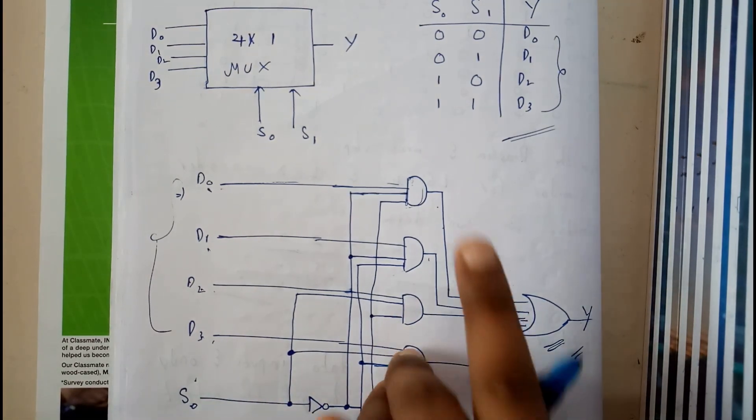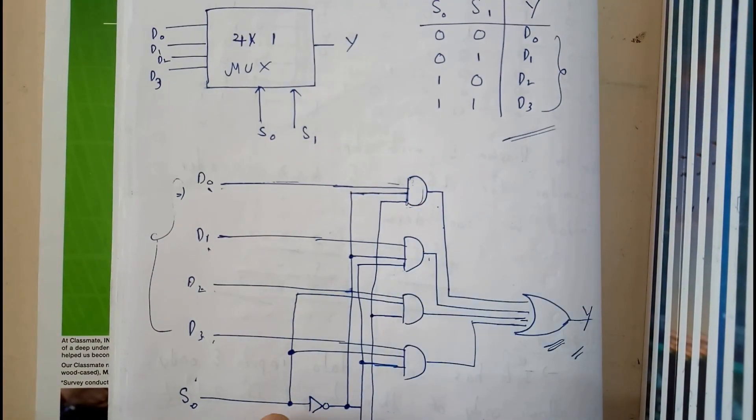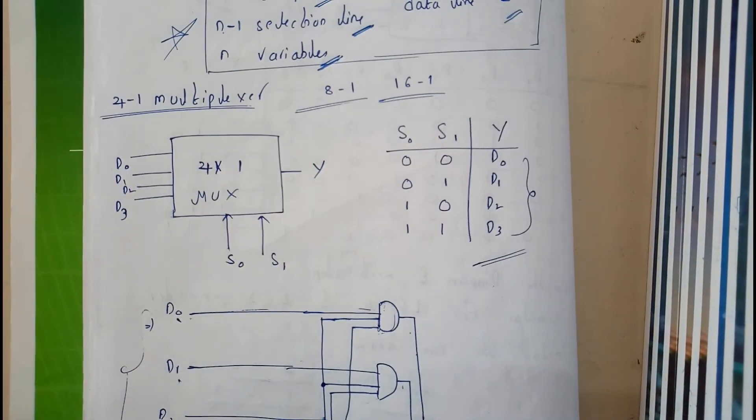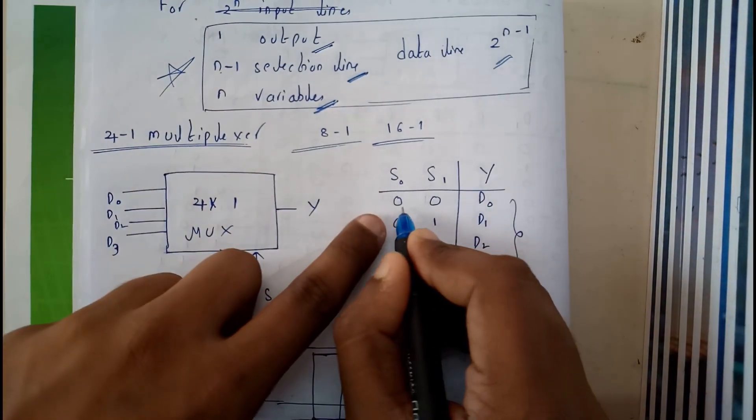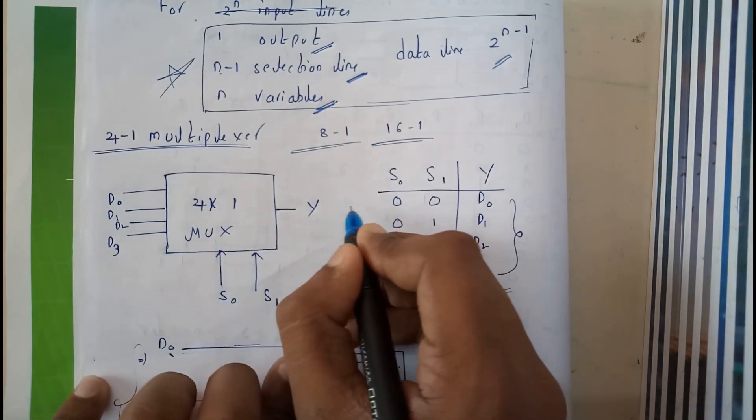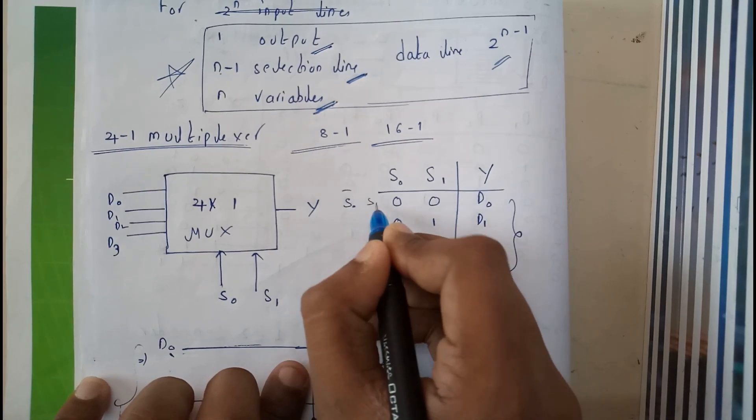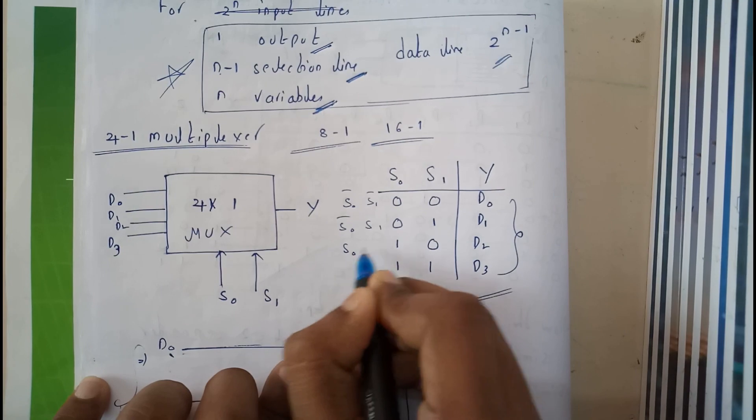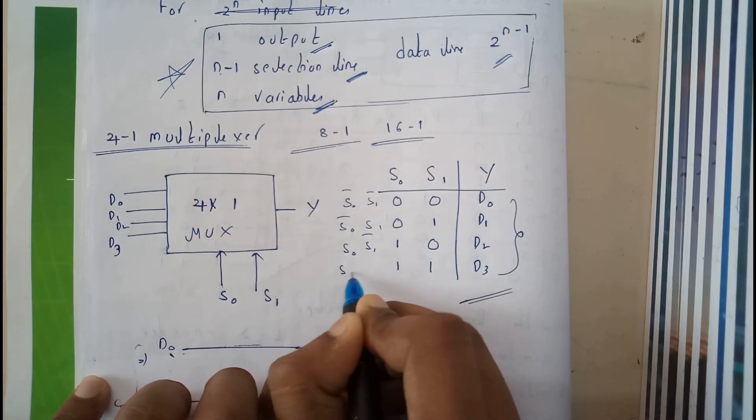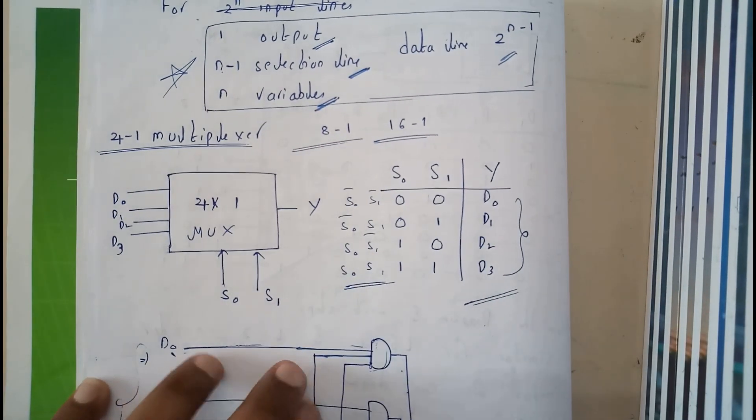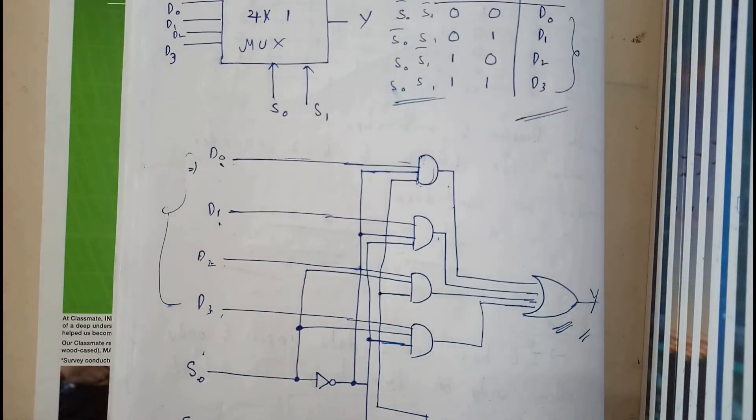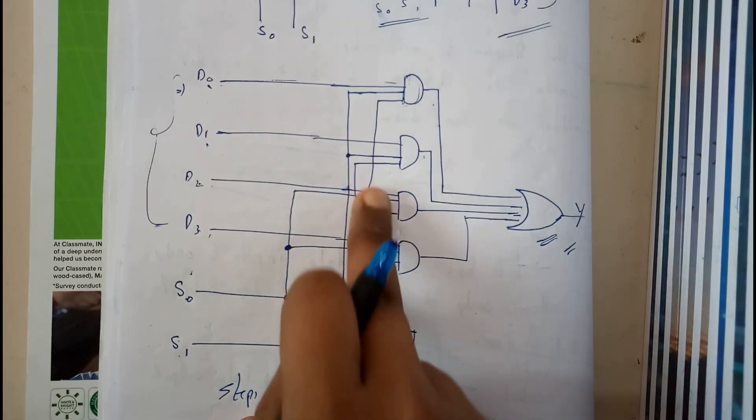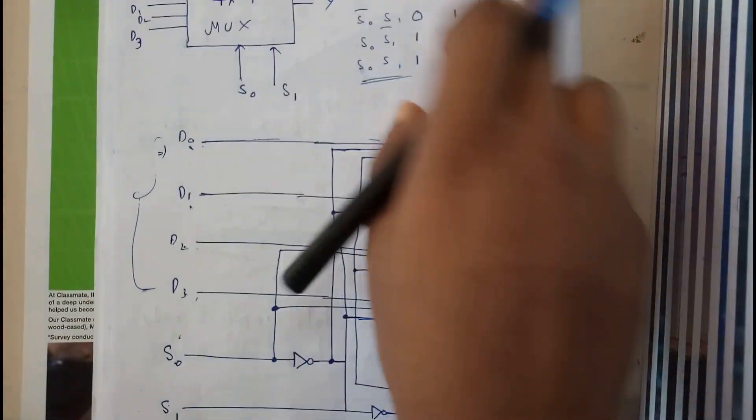I hope everyone is clear with these AND gates. As per our previous combinations, for s0 s1 equals zero, it is s0 bar s1 bar. For this, this is s0 bar and s1. This is s0 and s1 bar. This is s0 and s1. So similarly like this I have just solved them. I have just connected these here by applying NOT gates. I have just drawn the diagram of this truth table.